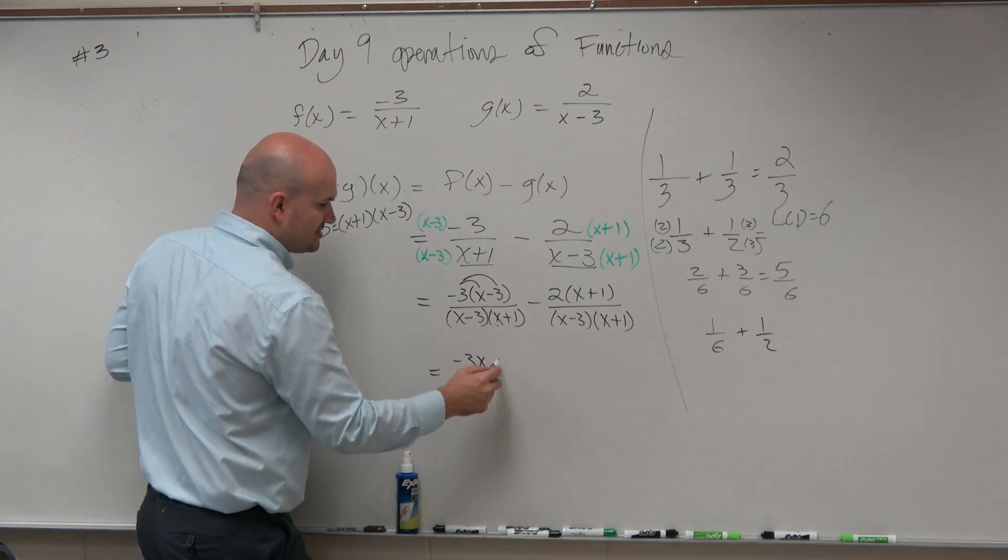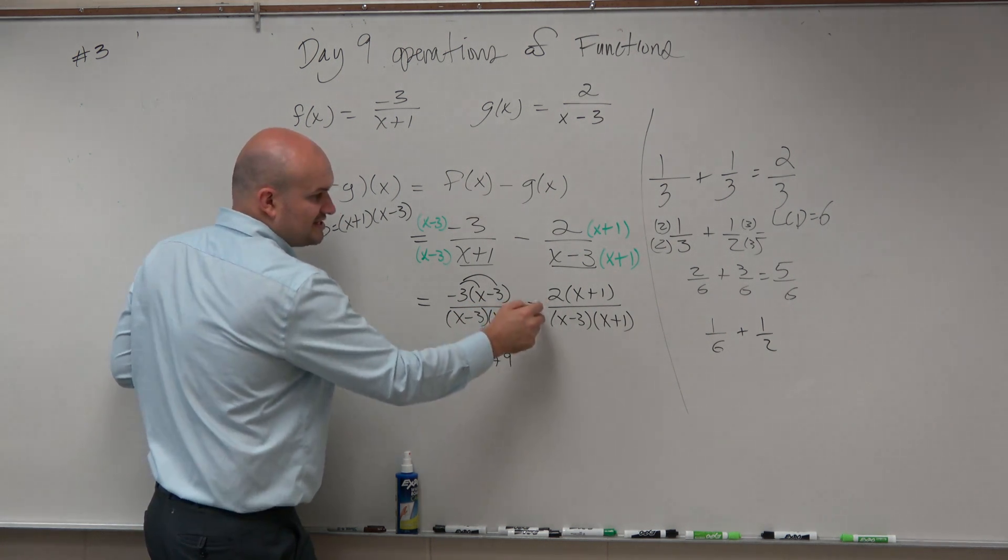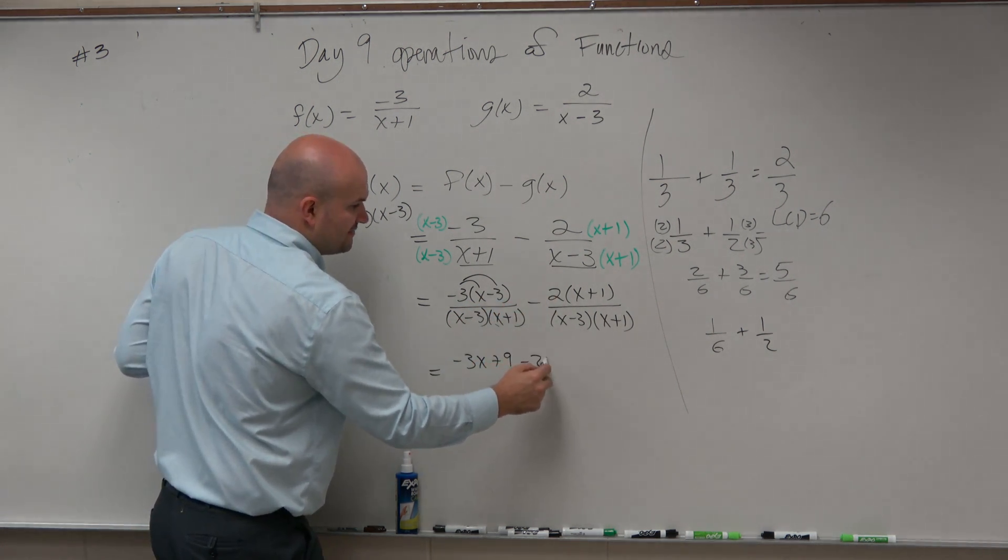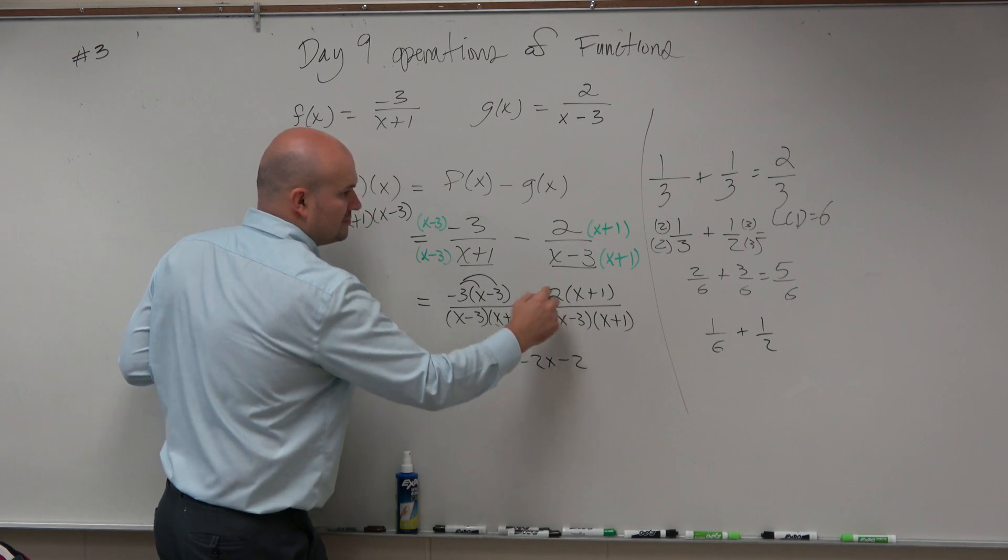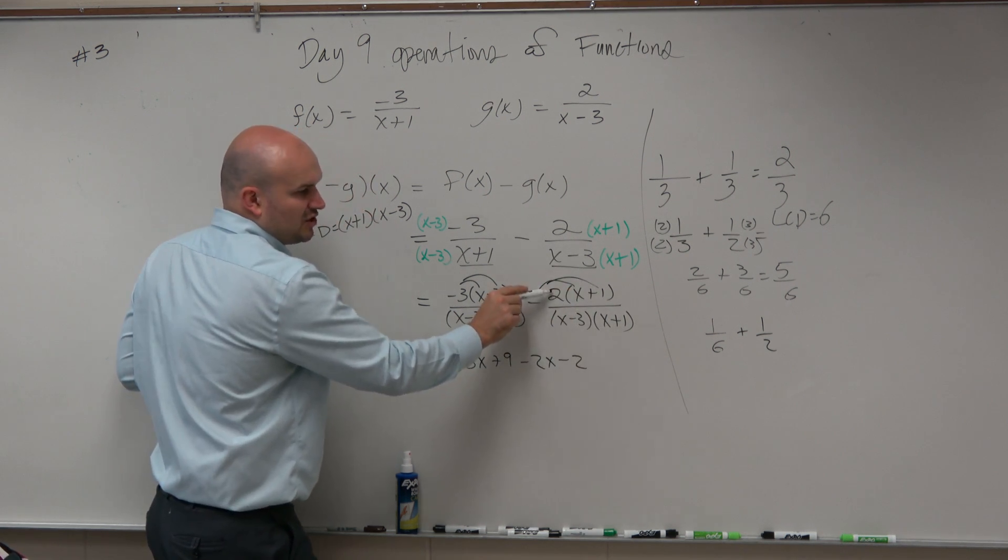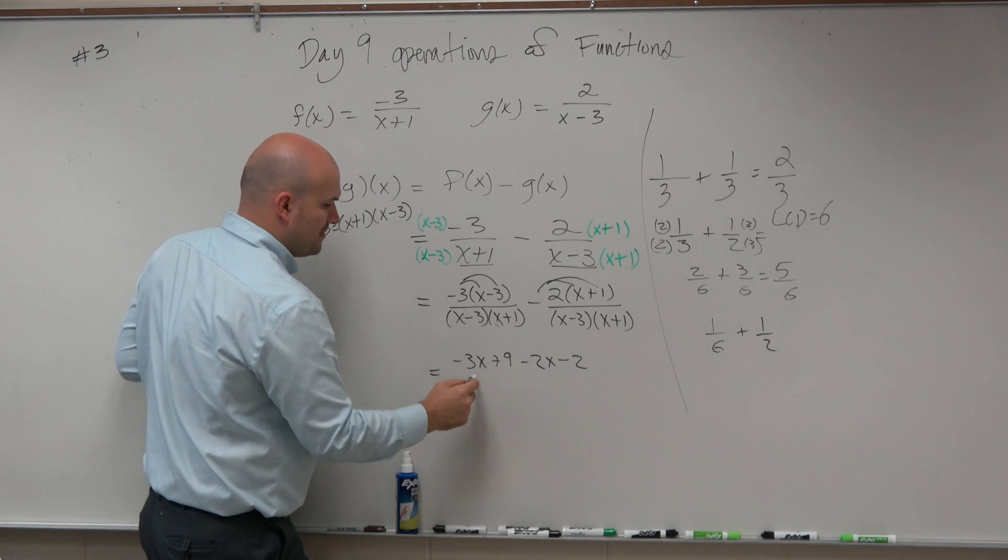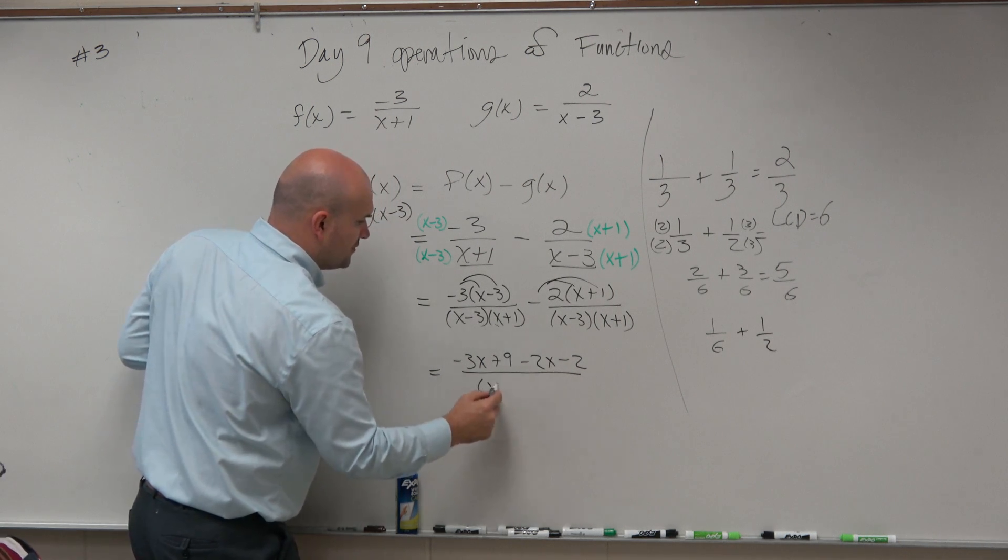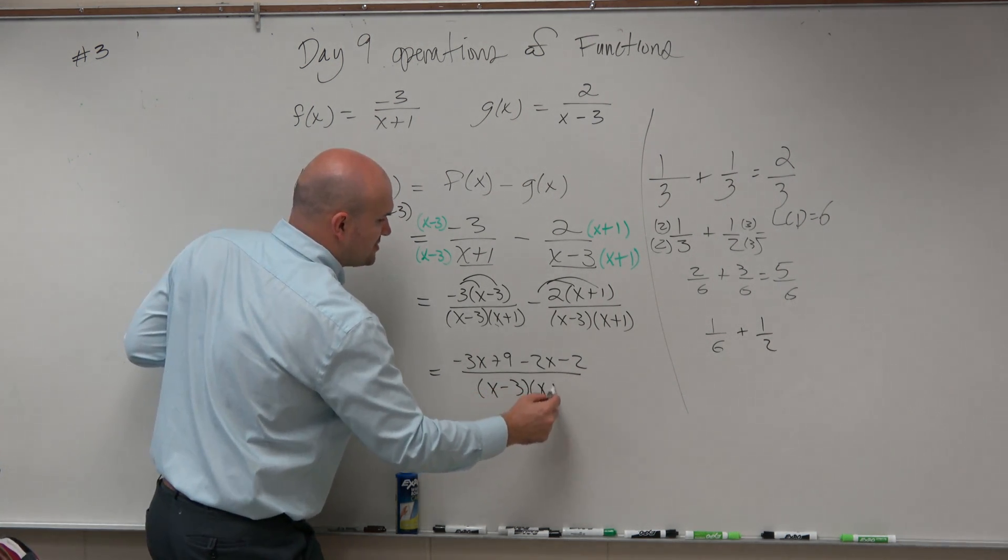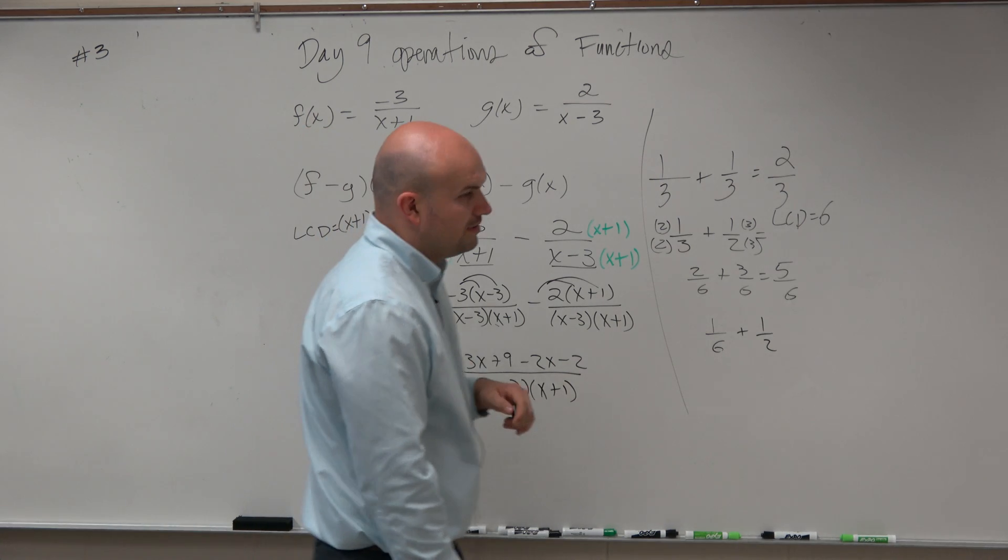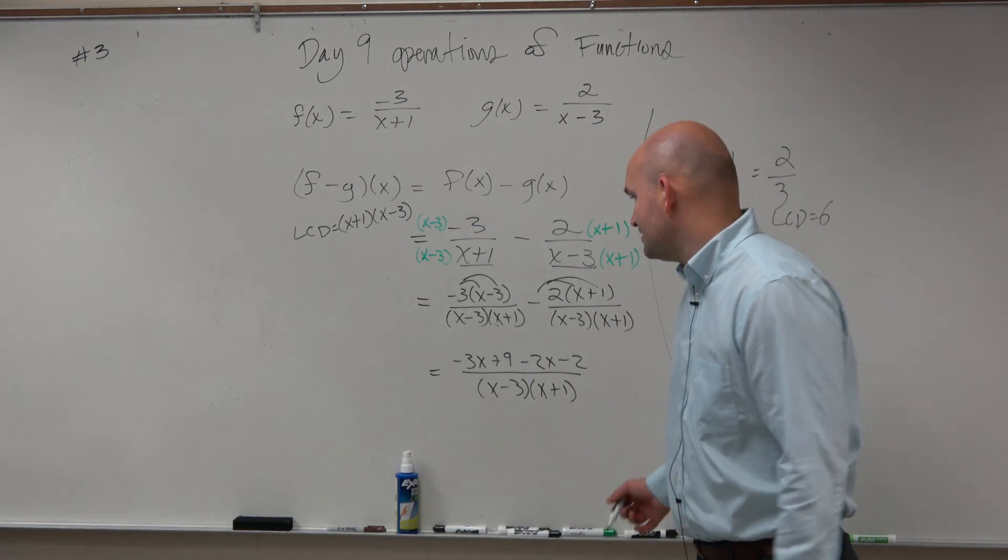So I'm going to apply the distributive property. So that's a negative 3x. Negative 3 times negative 3 is plus 9. This is really a negative 2. So it's negative 2x minus 2. Make sure you carry that. When you multiply the 2, make sure you remember it's a negative 2. And then that's all over x minus 3 times x plus 1. And then we can go ahead and simplify this to get our final answer.